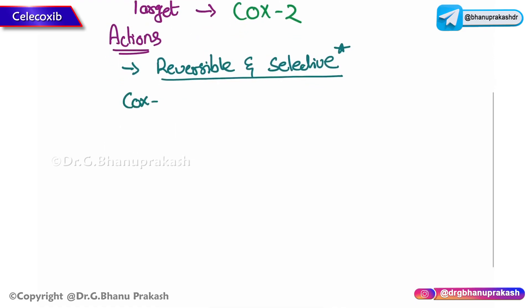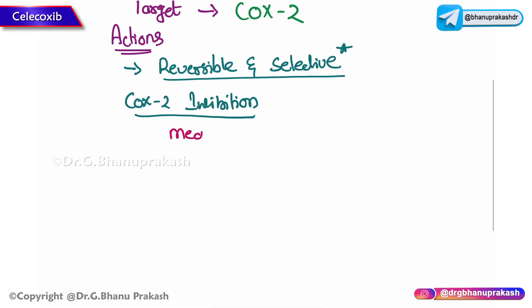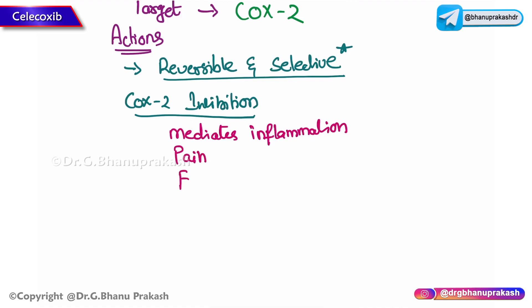What happens when there is COX-2 inhibition? COX-2 is responsible for mediating inflammation, pain, and fever. So whenever COX-2 is inhibited, inflammation, pain, and fever will be reduced.